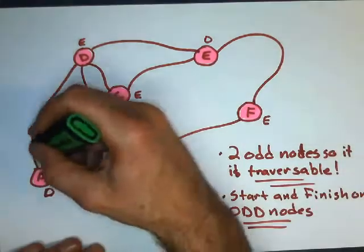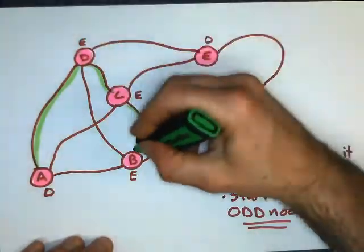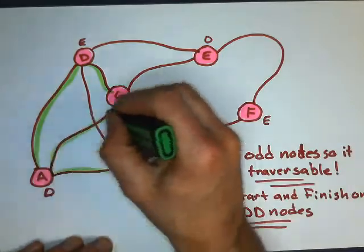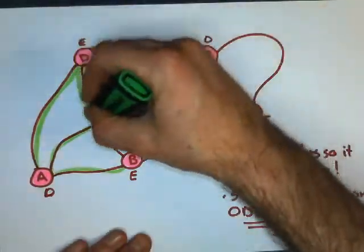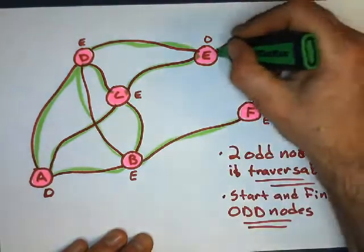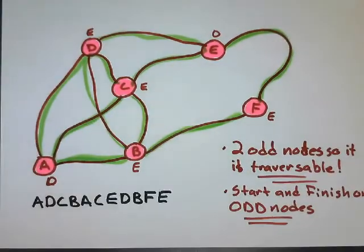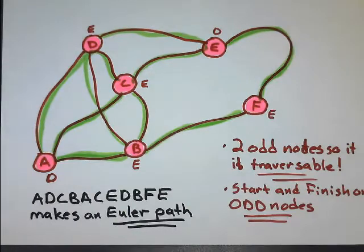I'll start over here at A. I'll go to D, then to C, to B, back to A, back to C, over to E, back to D, down to B, over to F, and around back to E. That's traversable. And there's the path listed.